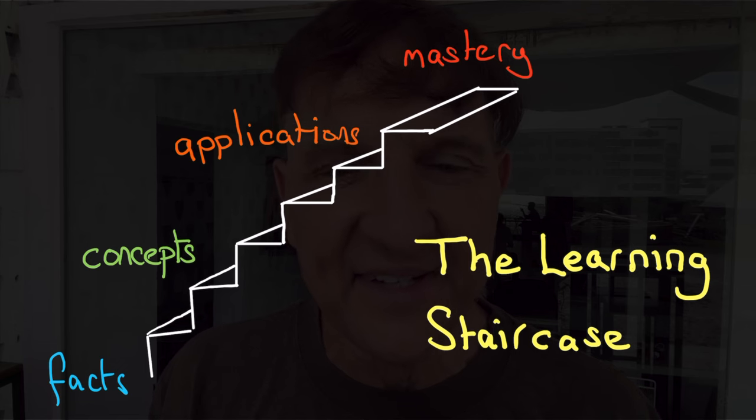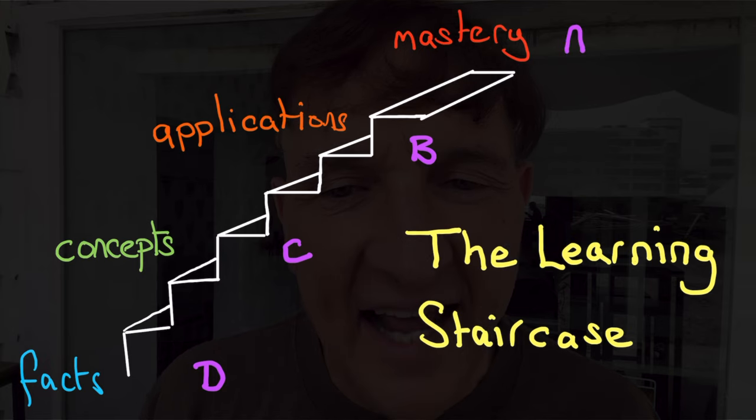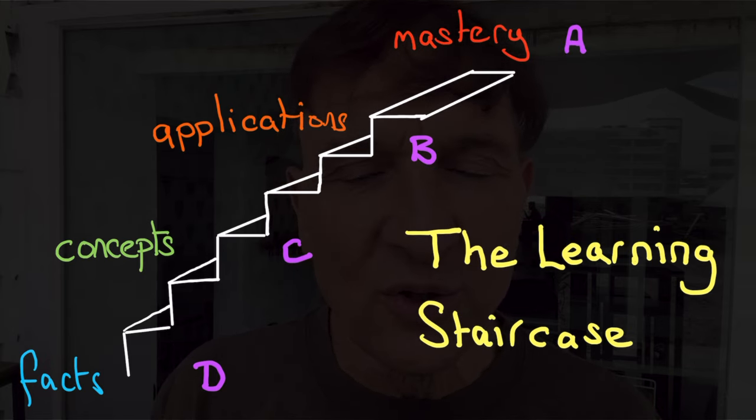I think there's a staircase for learning organic chemistry. At the bottom is learning facts — and if you don't know any facts, you'll get a D. If you know the facts but can't grasp the concepts, perhaps a C. A student who understands the concepts and can apply them quite well will get a B. But the student who masters the concepts and can apply them in almost any situation deserves an A, because that's the pinnacle of learning organic chemistry.